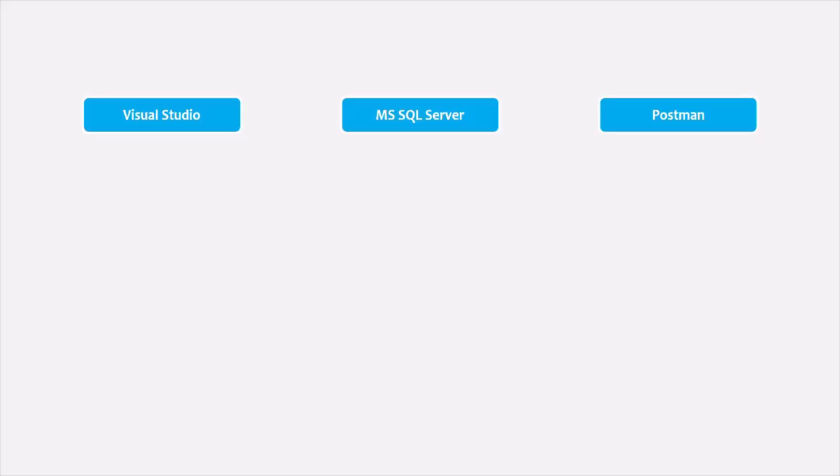The next step in order to create an ASP.NET Core MVC application is to download and install some software on the development PC. We are going to need three software packages for creating an ASP.NET Core application: Visual Studio, MS SQL Server, and Postman.